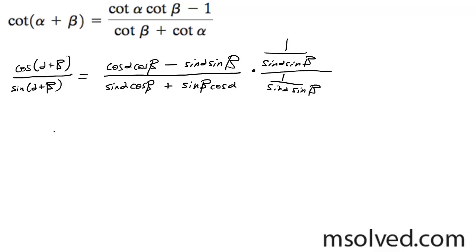So bring this down here. I'm going to have cosine alpha, cosine beta, all over sine alpha, sine beta minus.